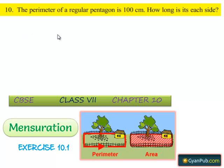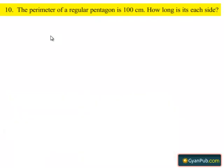Moving on to the next question, given the perimeter of a regular pentagon is 100 cm and we need to find how long is each side, let's do the solution.